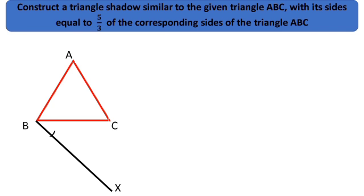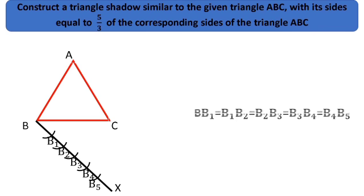Locate 5 points on BX. That's B1, B2, B3, B4, B5 so that B B1 equal to B1 B2 equal to B2 B3 equal to B3 B4 equal to B4 B5.